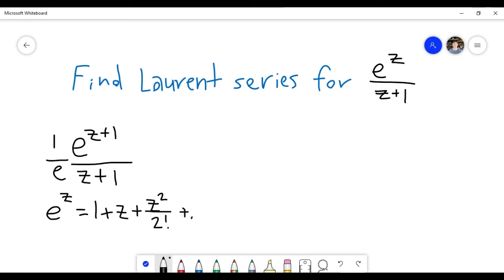And so the series for e to the z plus 1 is going to be really similar. It's just going to be 1 plus z plus 1 plus z plus 1 squared over 2 factorial. Maybe I'll write one more.